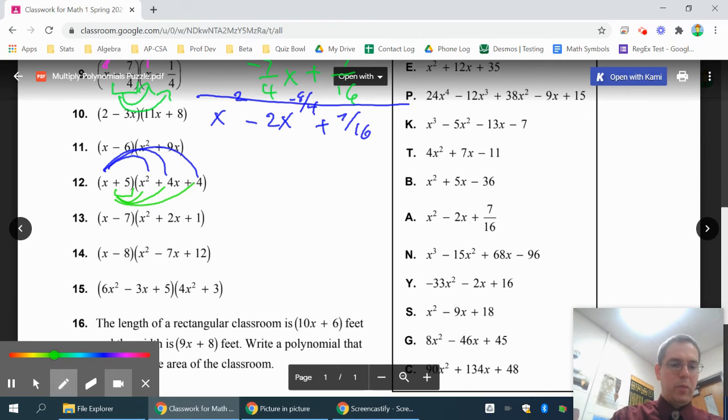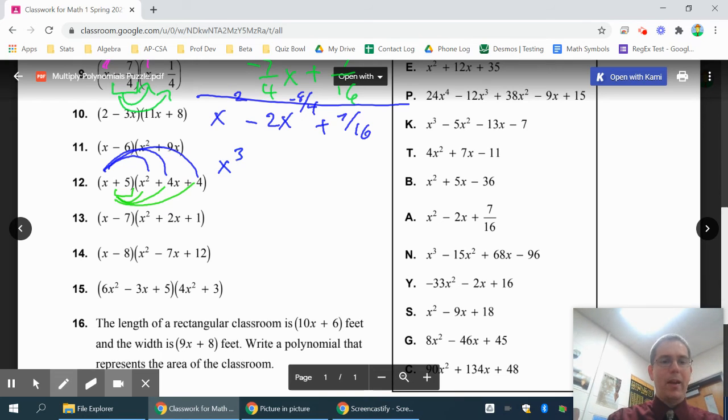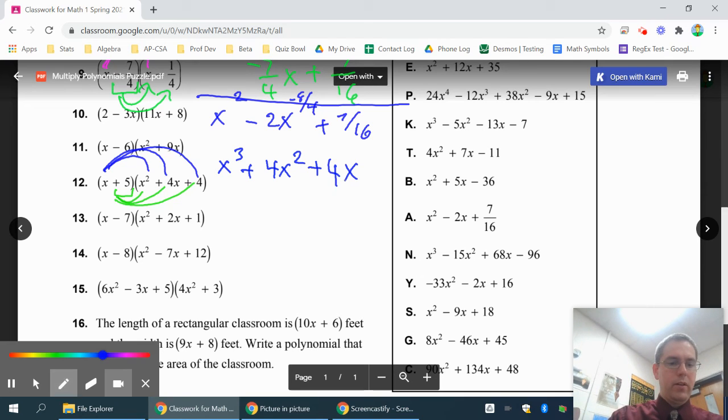So let's start by multiplying the x through first. x times x squared is x to the third. You just add 1 to the exponent when you multiply by x. And plus x times 4x is 4x squared. x times 4 is 4x.